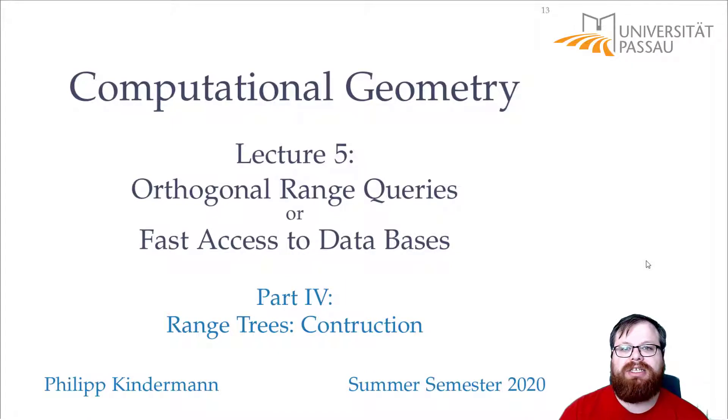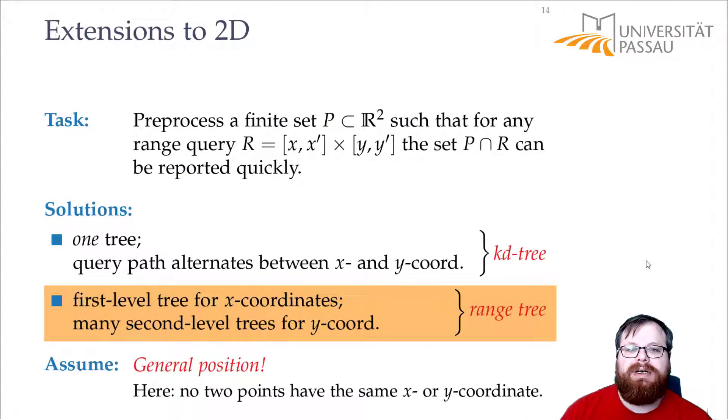Let's have a look at the other data structure, the range trees. Here the idea was that we have one first level tree that just sorts the points by x-coordinate, we get our canonical subsets there, and then for every canonical subset we have a second level tree that stores the y-coordinates of the points in it.